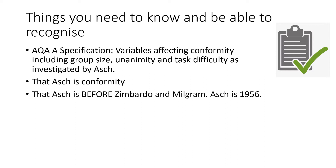The specification point states it's essential that you know variables affecting conformity, including group size, anonymity, and task difficulty, as investigated by Asch. It's important to note that Asch is related to conformity — sometimes people get muddled, thinking Asch is obedience or confusing him with Milgram. Asch is conformity, and so is Zimbardo, whereas Milgram is obedience. Asch came before Zimbardo and Milgram — Asch is 1956.